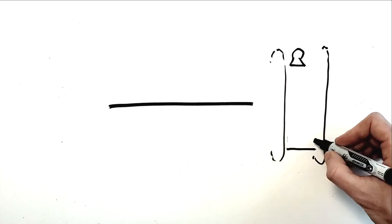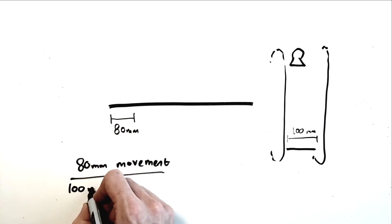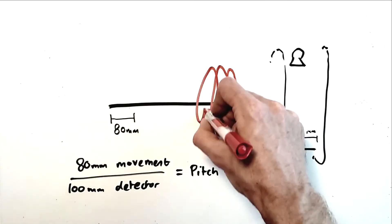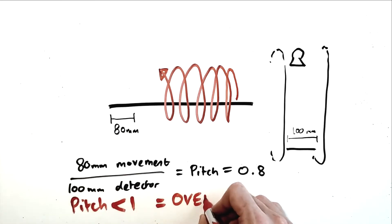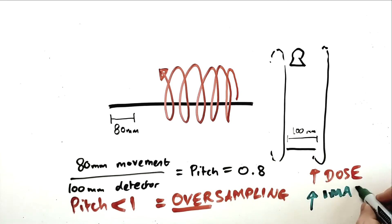In the first example, with a pitch of 0.8, we are oversampling. This means that the edge of the collimation field in each rotation is overlapping with the previous rotation. And that means that we cover less z-axis body area in a longer amount of time, and we are increasing the dose to the patient.